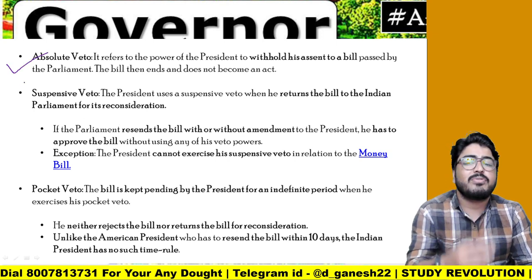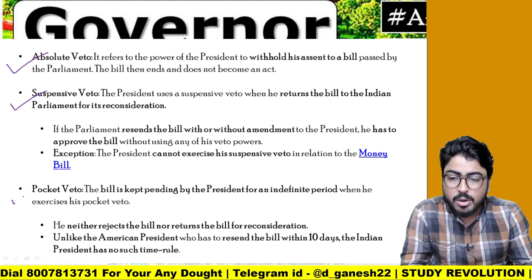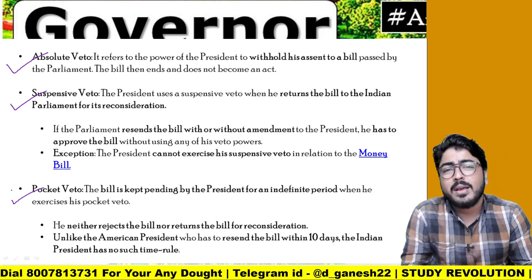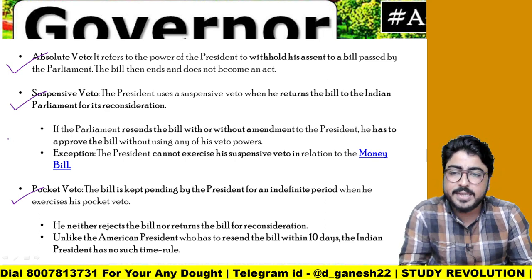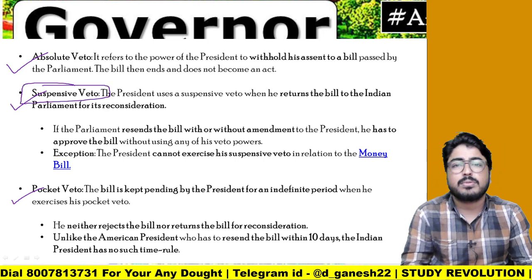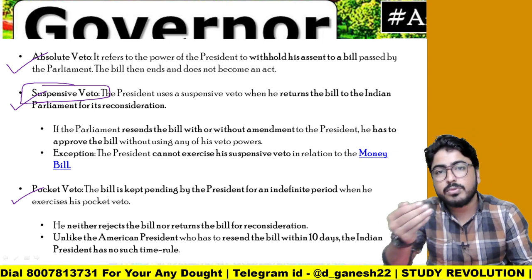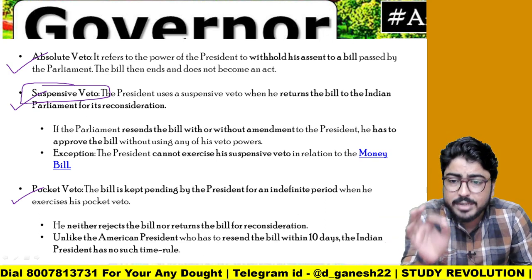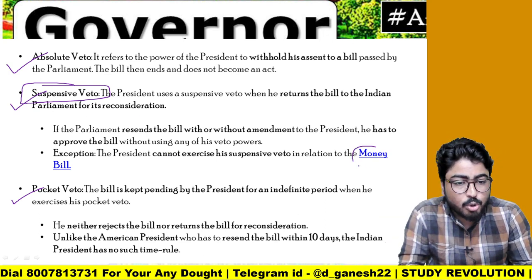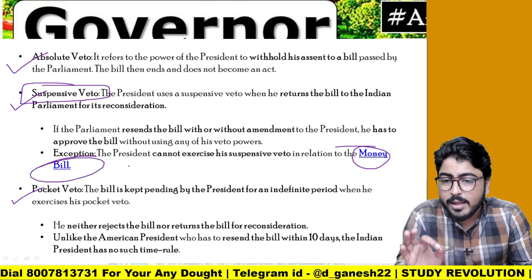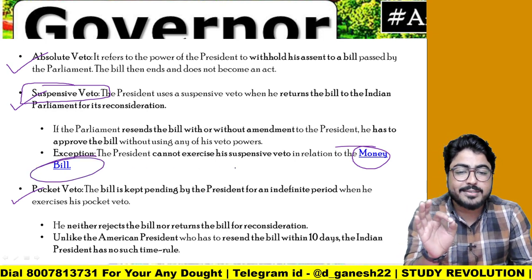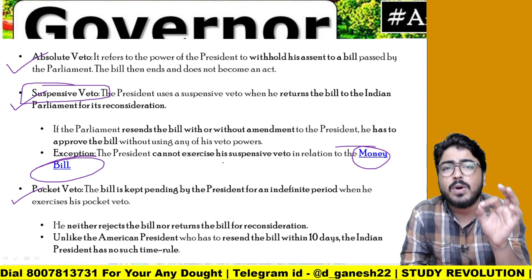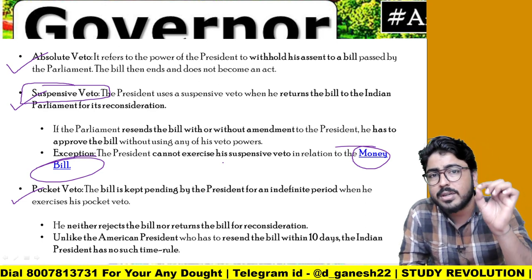So we have absolute veto, suspensive veto, and pocket veto — in simple language. But there is an exception. For suspensive veto, where the president or governor sends the bill back for reconsideration, there are some exceptions. If it is a money bill, the president cannot exercise his suspensive veto in relation to the money bill. If it is a money bill, suspensive veto will not be used — this applies to the governor as well.